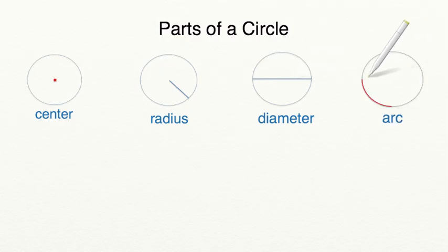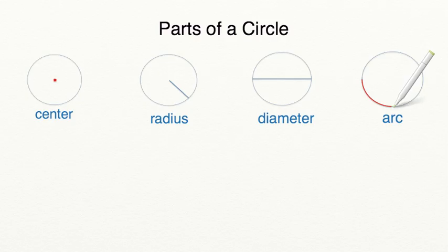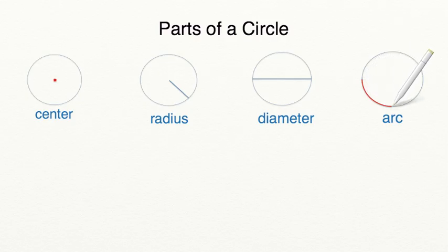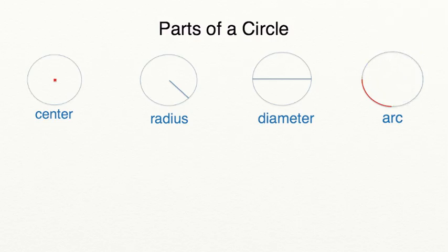An arc is part of the edge of the circle. As you can see, this arc is about one fourth of the way around the circle. However, an arc can be much larger or much smaller.